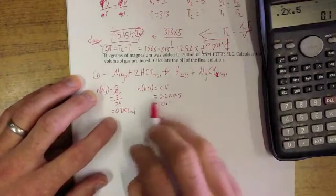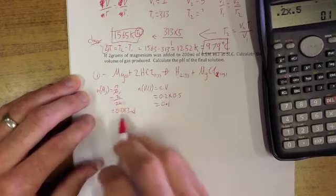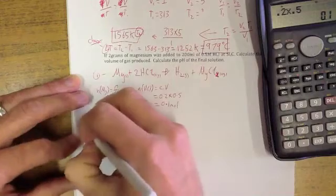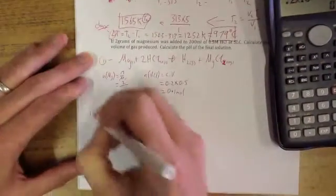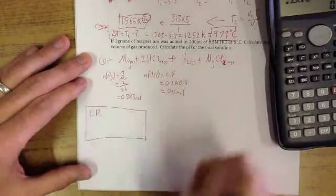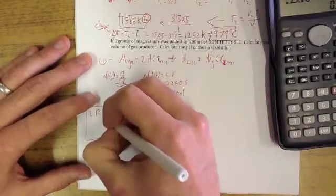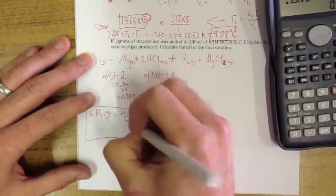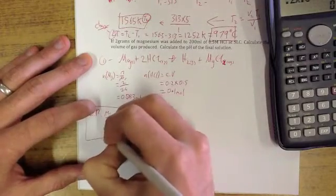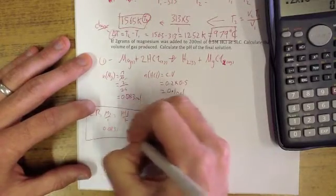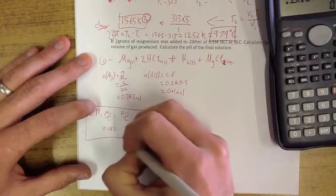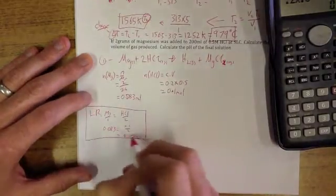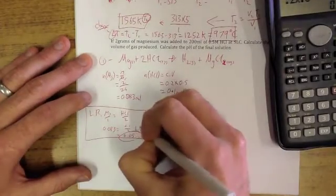Okay, that's how much hydrochloric acid we have, that's how much magnesium we have. And because we have moles of both reactants, we need to do a limiting reagent. And limiting reagent, as you know, I put it into a box and I say Mg over 1 equals HCl over 2. And we put our values in: 0.083 equals 0.1 over 2 equals 0.05. Our smallest value is our hydrochloric acid, that means that's going to run out first. So this is our limiting reagent.